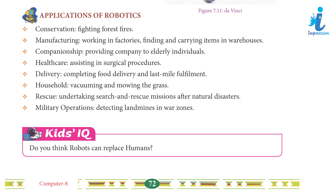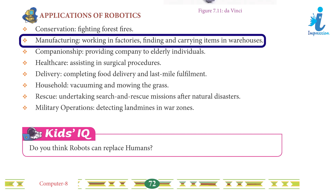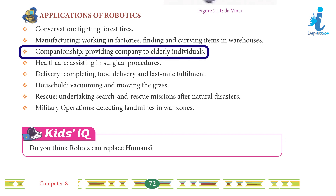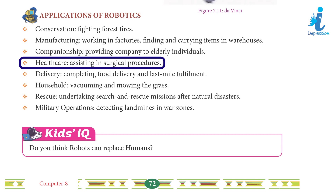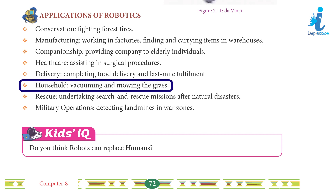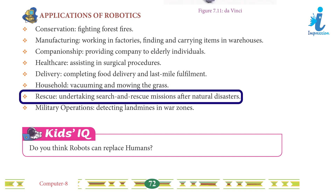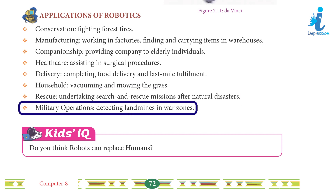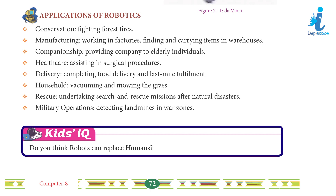Applications of Robotics: Conservation — fighting forest fires. Manufacturing — working in factories, finding and carrying items in warehouses. Companionship — providing company to elderly individuals. Healthcare — assisting in surgical procedures. Delivery — completing food delivery and last-mile fulfillment. Household — vacuuming and mowing the grass. Rescue — undertaking search and rescue missions after natural disasters. Military Operations — detecting landmines in war zones. Kids IQ: Do you think robots can replace humans?